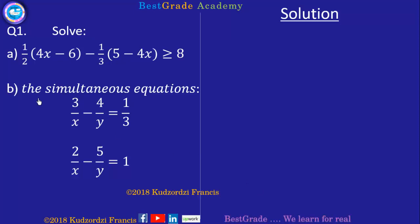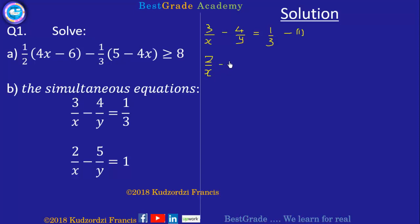Now we have the simultaneous equations. Equation 1 is: 3 over x minus 4 over y equals 1 over 3. Equation 2 is: 2 over x minus 5 over y equals 1.